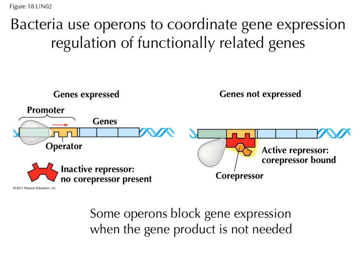The single promoter controls the expression of genes involved in a similar process. Here's one example — a repressible operon. Most of the time the genes are expressed until there's enough product. That product amount indicates the genes no longer need to be expressed — it would be a waste of energy. So the product activates the repressor, which binds the operator and physically blocks RNA polymerase from accessing the genes and transcribing them. That represses gene expression when there's enough product. This is a negative, repressible operon.